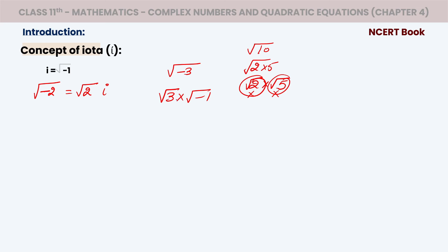So root three stays as it is, and the minus one under root becomes IOTA. Whenever you see IOTA, its value is √(−1). This is the concept of IOTA — we consider it an imaginary number. The value of IOTA is √(−1). This imaginary number arises when solving quadratic equations where values come out negative under the root.